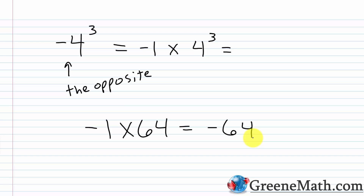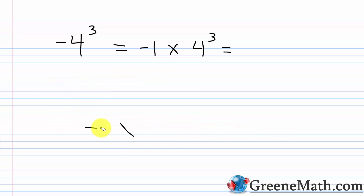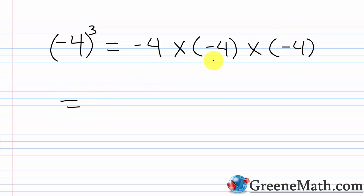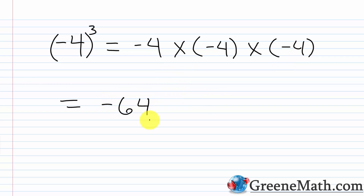Now suppose I enclose negative 4 inside parentheses and cube it. Will that change the answer? In this case it will not. With parentheses I have negative 4 times negative 4 times negative 4. I have three negatives involved. Three is an odd number, so I have one pair of negatives that gives a positive, but one left over — so I end up with a negative result: negative 64 in this case also.